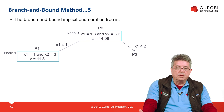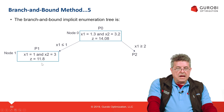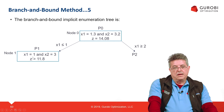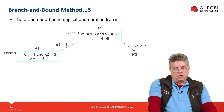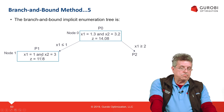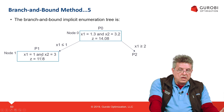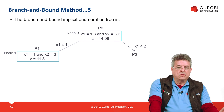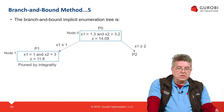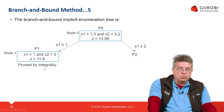So 11.8 is a lower bound to the optimal solution of the MIP problem. Since we have identified integral values for all variables in this node, we don't need to explore it any further. We say the tree has been pruned by integrality — we don't need to explore this leaf anymore.